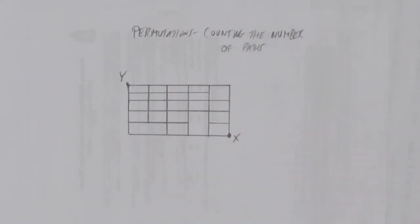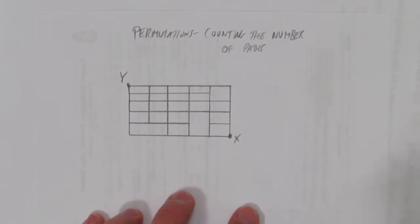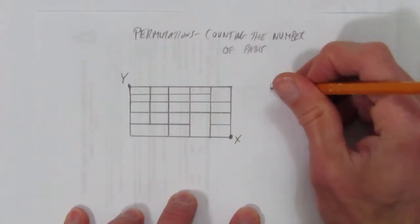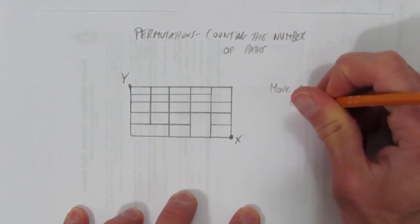Here's an example of a question where you're asked to do permutations. In particular, you're counting the number of paths. So let's say you can only move from x towards y, and you have to move only north and west.